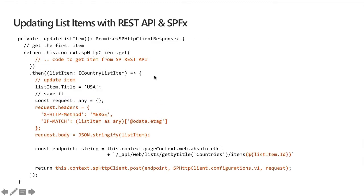In the code, I first get a reference to a specific item, then I change its title to 'USA' and save it. To do that, I create a request object and in the headers set the X-HTTP-Method equal to 'merge' and the if-match equal to the list item's @odata.etag property — cast as any since my ICountryListItem interface doesn't have this property. I then set the request body to a stringified version of the updated list item. The endpoint points to the items collection with the specific item ID in parentheses, then I issue a POST with the configuration and this request.